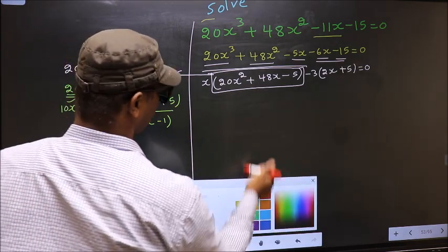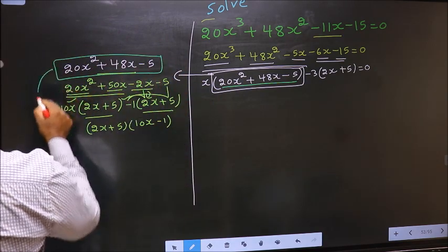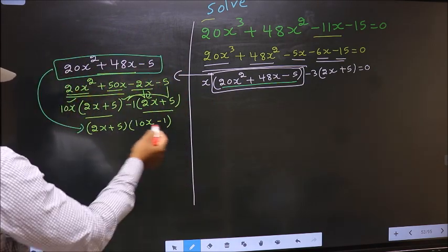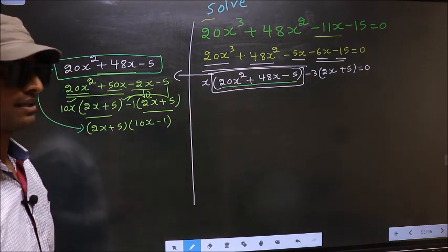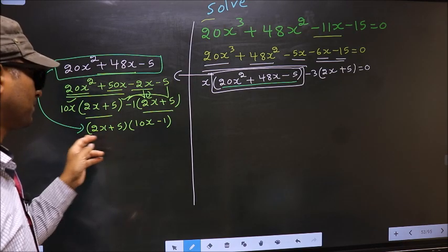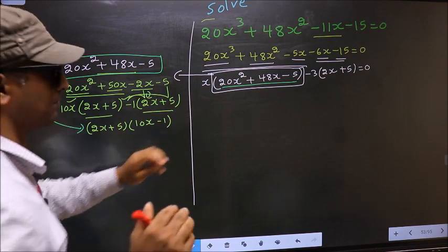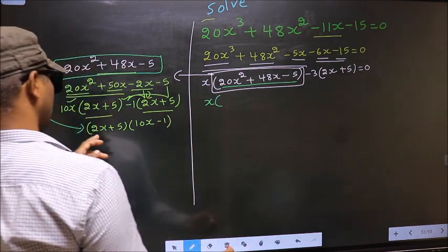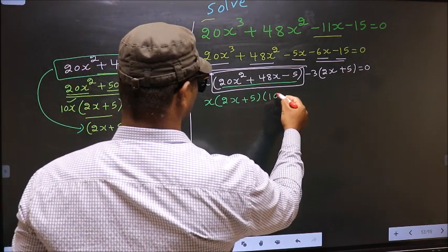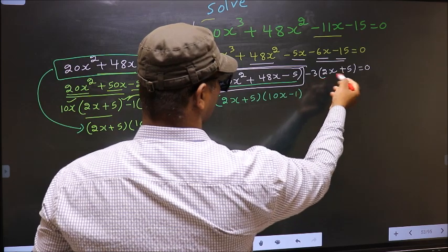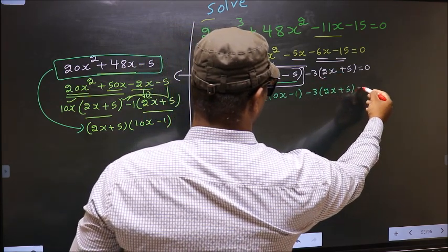In place of this quadratic, now I will write (2x + 5)(10x - 1). So the equation changes to x(2x + 5)(10x - 1), and over here no change, equal to 0.